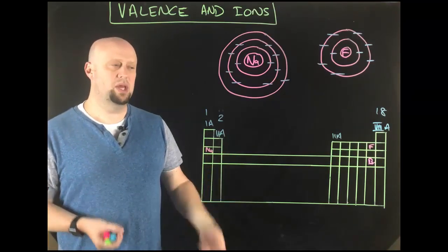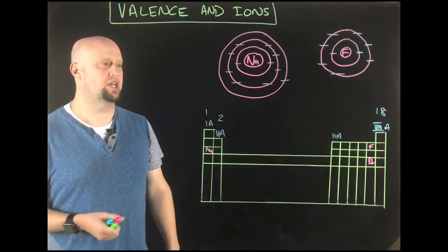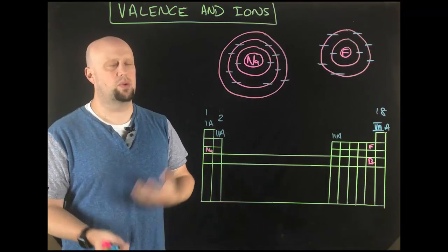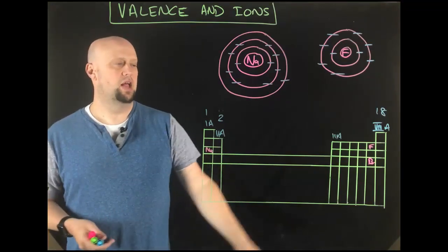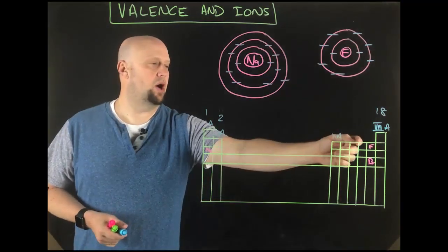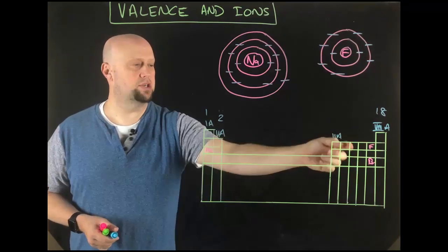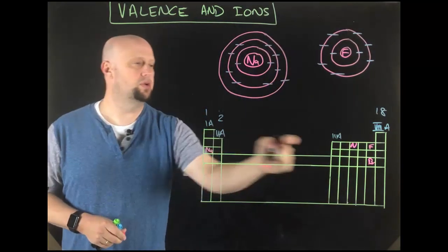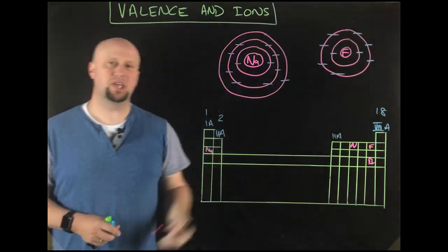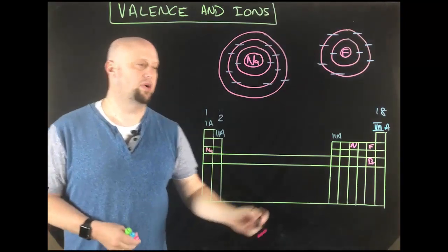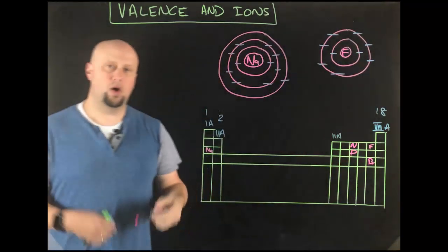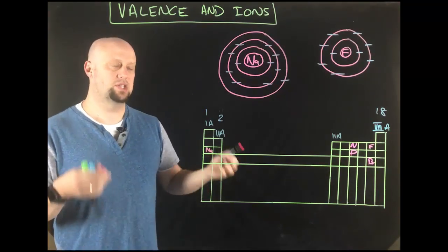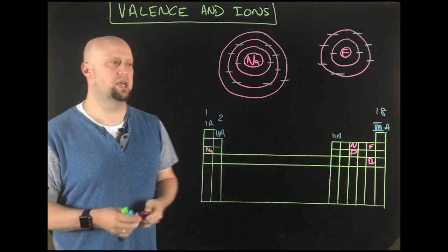You can immediately look at the column an element is in and know how many valence electrons it has. If you know the first couple of rows well — oxygen, carbon, nitrogen — you'll know that nitrogen is one, two, three, four, five. That means everything in that column is five, so phosphorus below it also has five valence electrons, and arsenic below that also has five. Everything in the same column has the same number of valence electrons.